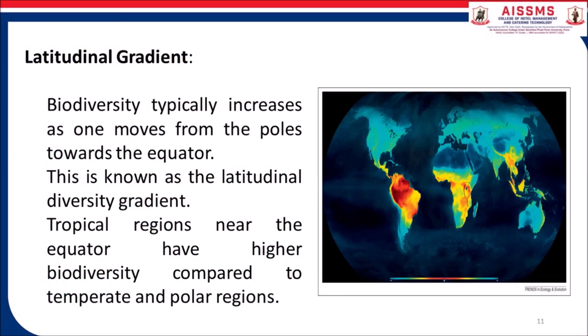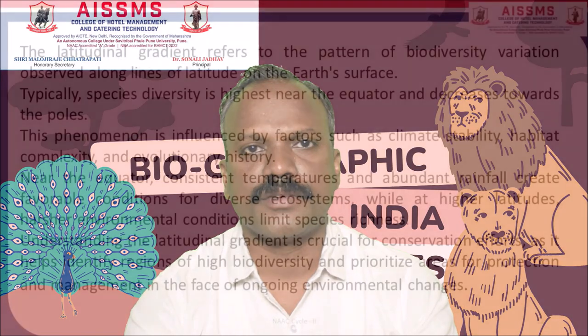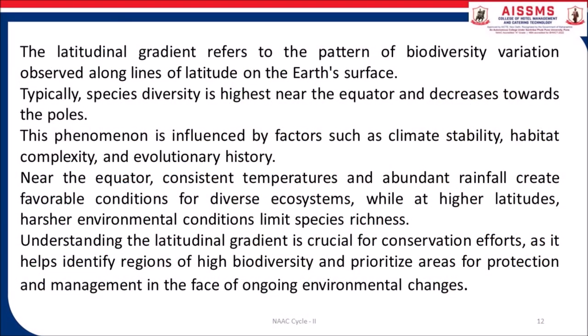Regarding the latitudinal gradient: biodiversity typically increases as one moves from the poles towards the equator. This is known as the latitudinal diversity gradient. Tropical regions near the equator have higher biodiversity compared to temperate and polar regions. The latitudinal gradient refers to the pattern of biodiversity variation observed along lines of latitude on the Earth's surface, influenced by factors such as climate stability, habitat complexity and evolutionary history.